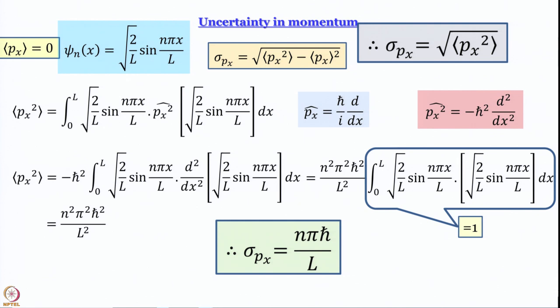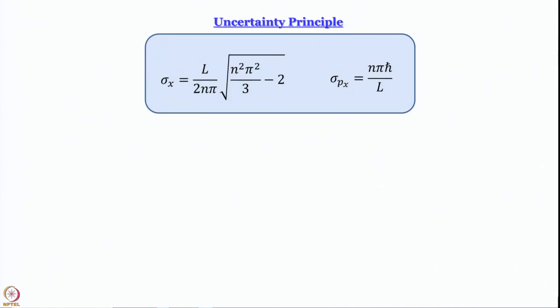σ_p_x is just the square root of ⟨p_x²⟩, which gives us the simple expression nπℏ/L. We have now determined uncertainty in position and uncertainty in momentum. The next task is to multiply them together and see whether the uncertainty principle is satisfied for the particle in a box.